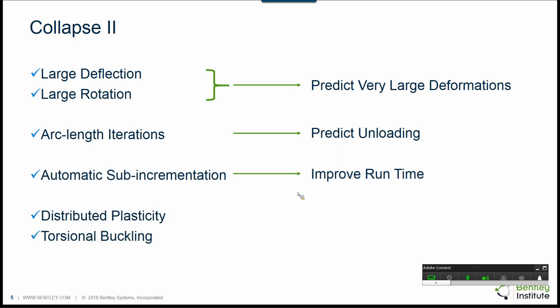The distributed plasticity, in other words, allowing the hinge formation to occur anywhere along the length and gradually through the cross section, and in addition to the torsional buckling, now give you a very improved failure mechanism.